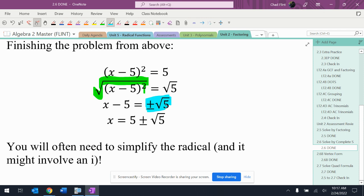remember, you have to get a plus or minus. Plus or minus square root of 5 when you take the square root. The square root got rid of the squared, and you just have x minus 5 equals plus or minus square root of 5.